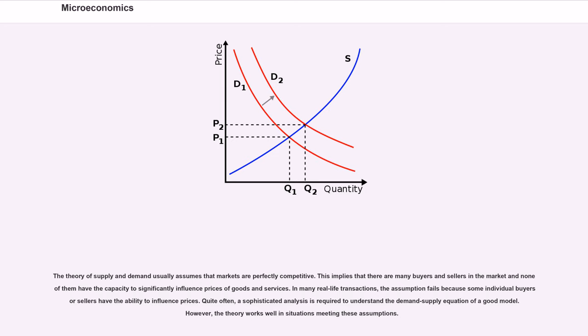In many real life transactions, the assumption fails because some individual buyers or sellers have the ability to influence prices. Quite often, a sophisticated analysis is required to understand the demand supply equation of a good model. However, the theory works well in situations meeting these assumptions.